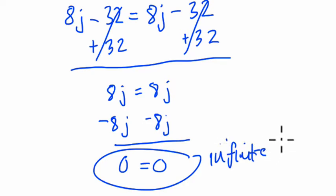And those 32s cancel out, and now it's even more obvious 8j equals itself. And if you're not convinced yet, subtract 8j from both sides, and you get something that says 0 equals 0, and this is always true. This means there are infinite solutions.